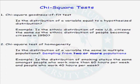Let's talk about four different scenarios or situations where we use a chi-squared test of significance. The first one is called the chi-squared goodness of fit test. We use it if we want to know whether the distribution of a variable is equal to a hypothesized distribution.